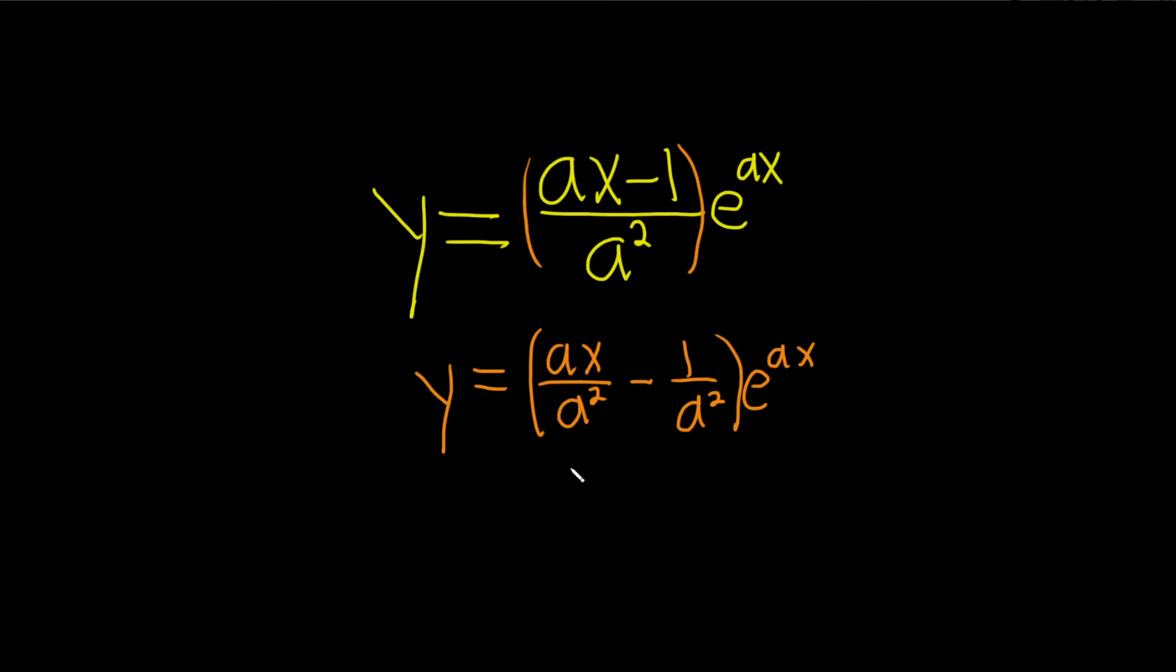It's just easier to think about when we differentiate. A here is a constant. So y equals, so here these cancel, so we're left with 1 over a times x minus 1 over a squared. And then here we have the e to the ax.